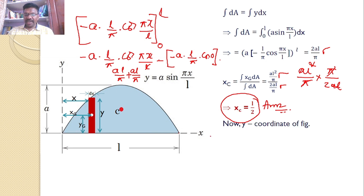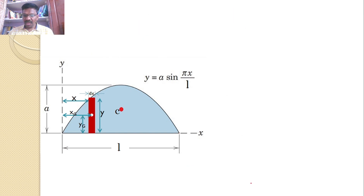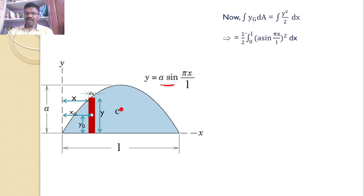Similarly, the y-coordinate yc = ∫yg·dA / ∫dA. ∫dA was already calculated as 2al/π. Now we need ∫yg·dA. From the diagram, yg is exactly y/2 — the midpoint of the strip. So ∫yg·dA = ∫(y/2)·y·dx = ∫(y²/2)·dx. Substituting y = a·sin(πx/l), limits from 0 to l: (1/2)·∫₀ˡ a²·sin²(πx/l)·dx.